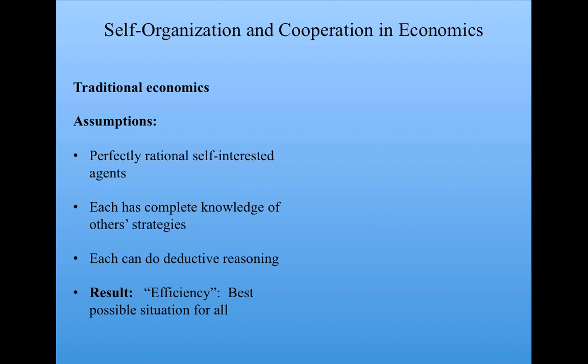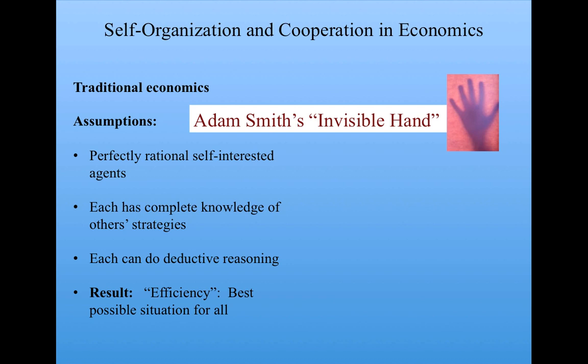And the result is the notion of efficiency — that in some sense, the agents working collectively, even though they're self-interested, can lead to a situation that's the best possible for all. This notion was first proposed by Adam Smith back in the 1700s, and it's come to be called the invisible hand.